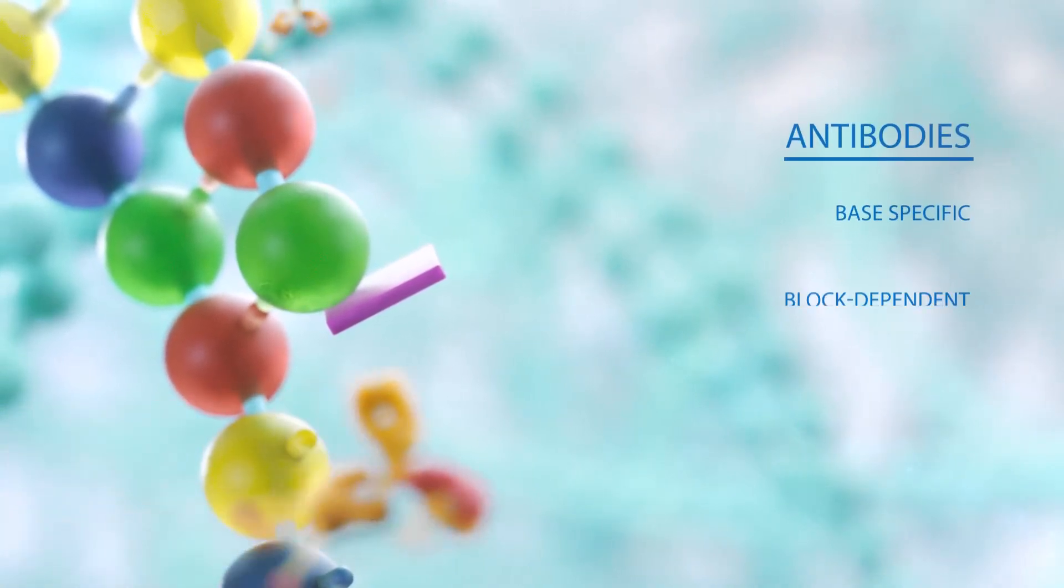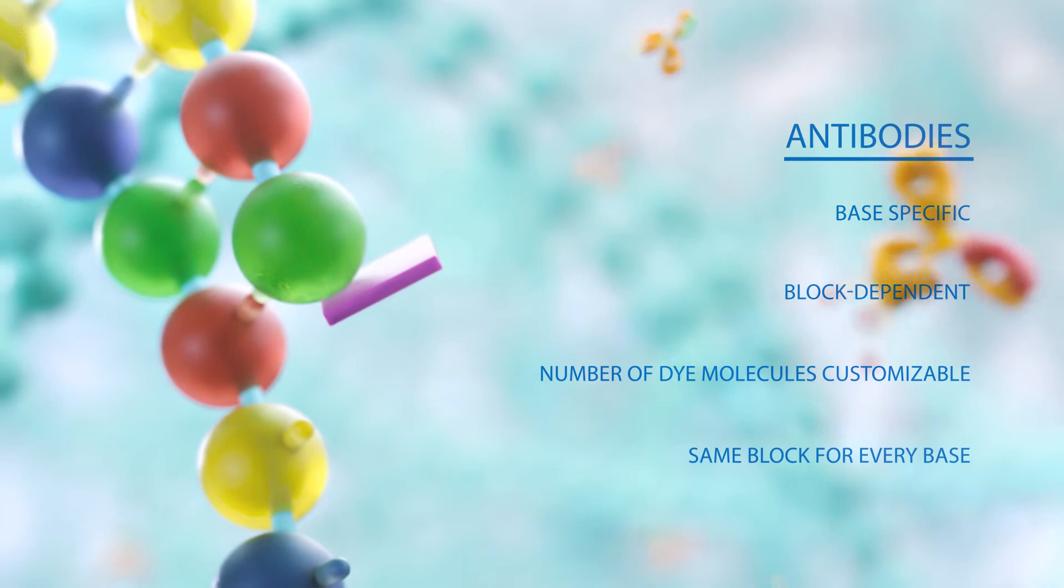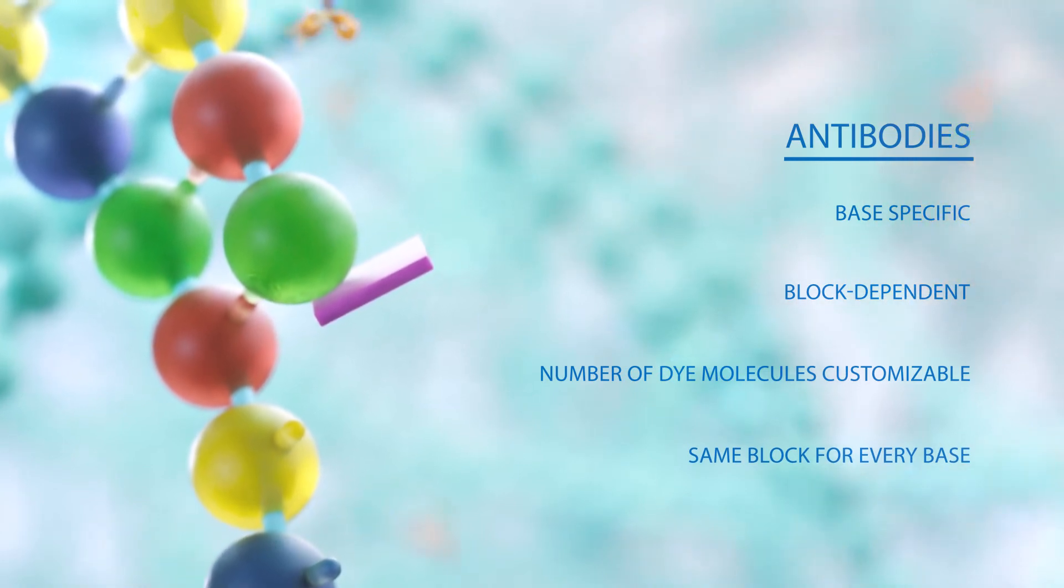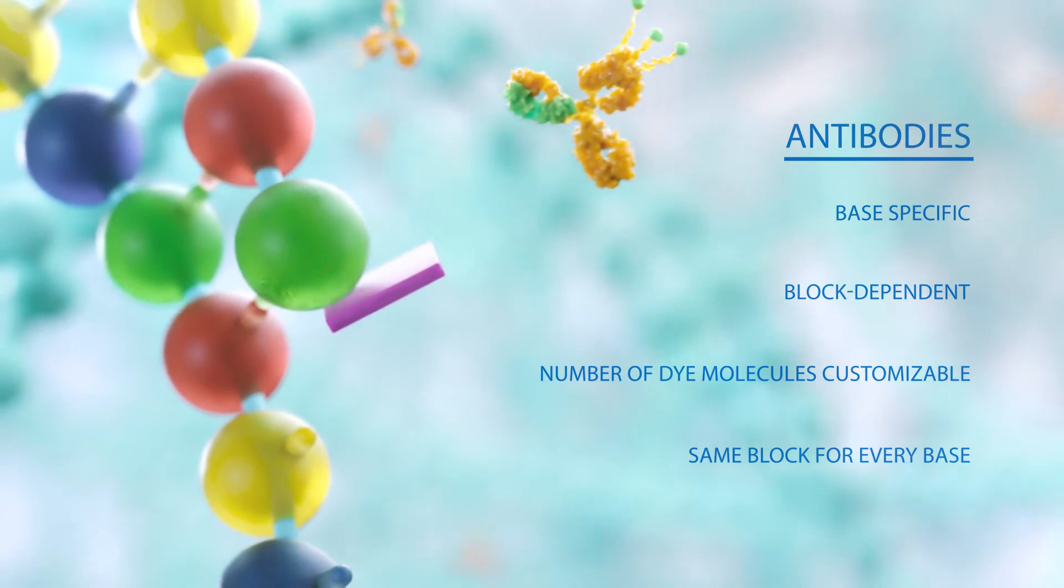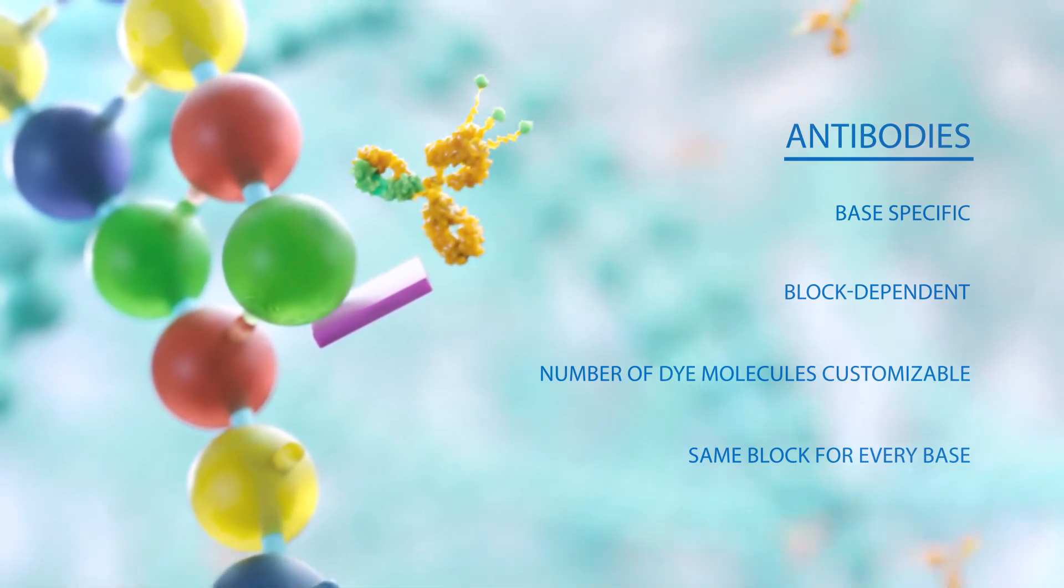Four different antibodies labeled with specific dyes are introduced onto the DNB array. The antibodies are base-specific and block-dependent. The antibody binds to the incorporated nucleotide.